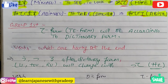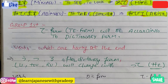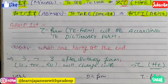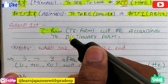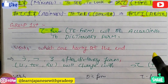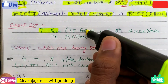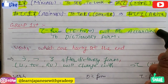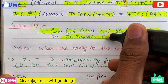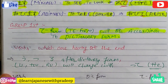Now let's come to Group 1. The te form of Group 1 verbs will change according to the dictionary form of those verbs. So you will have to know how to make the dictionary form to change to the te form of Group 1 verbs. I'll drop the link in the description for dictionary form.